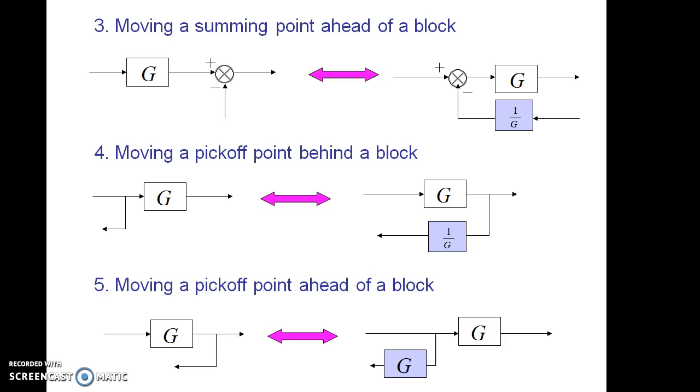The third rule is moving a summing point ahead of a block. In this case, the resultant signal will get multiplied with the same value G though the second signal should not be having that factor. So to equalize it, the second signal's path will be included with the gain factor 1 by G.